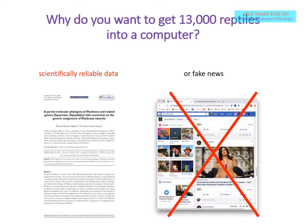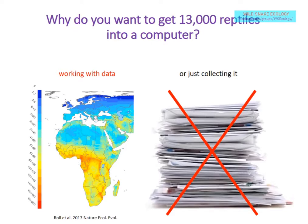Another reason is that you want scientifically reliable data available in a database on top of the actual papers, not just on social media websites where many people get their information these days. For science data, that's probably not the best place. And finally, you want to work with data instead of just collecting it. For example, you can see a map of WebTile species richness in Africa, Europe, and the Middle East — a compilation of many different studies collapsed into one diagram showing where species are concentrated.